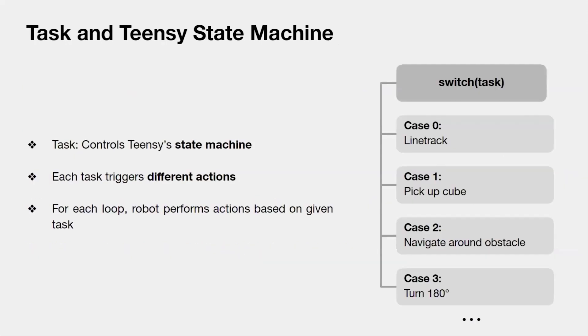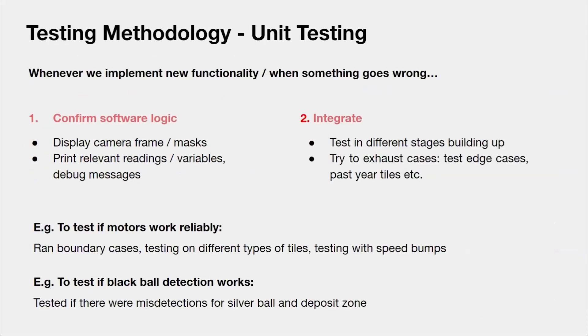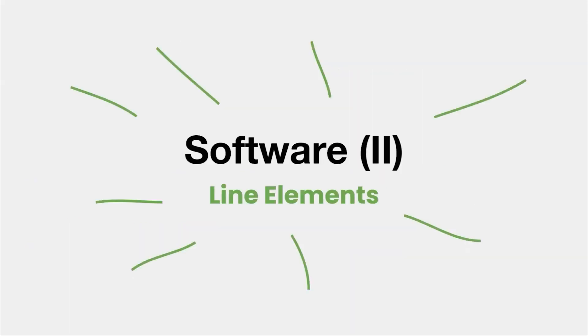The Teensy controls our robot's movements using a state machine based on the task number sent over by the RPi. Whenever we add new functionality to our code, we will perform unit testing. We will first confirm software logic using imshows and debug prints, then we integrate different components together and test on all edge cases.